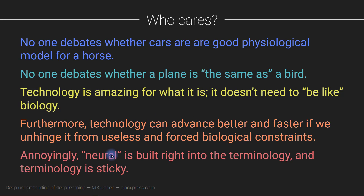The word 'neural' is built right into the terminology — artificial neural networks, convolutional neural networks, deep neural networks, artificial neurons — it's all over the place. Unfortunately, terminology has a way of being sticky, and it's really hard to change terms once they've been established.